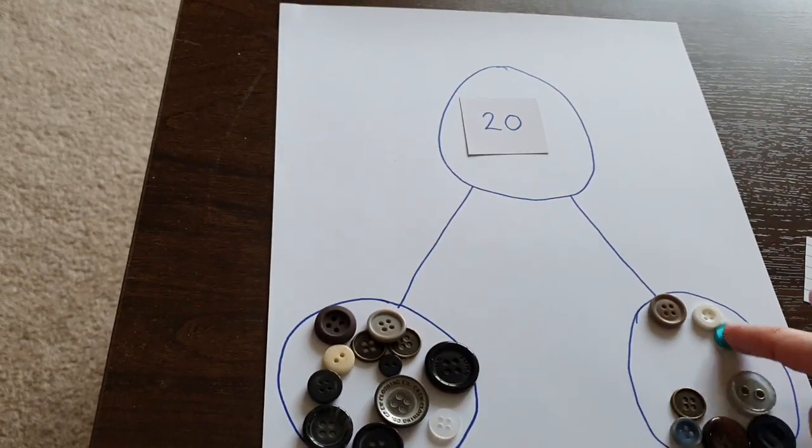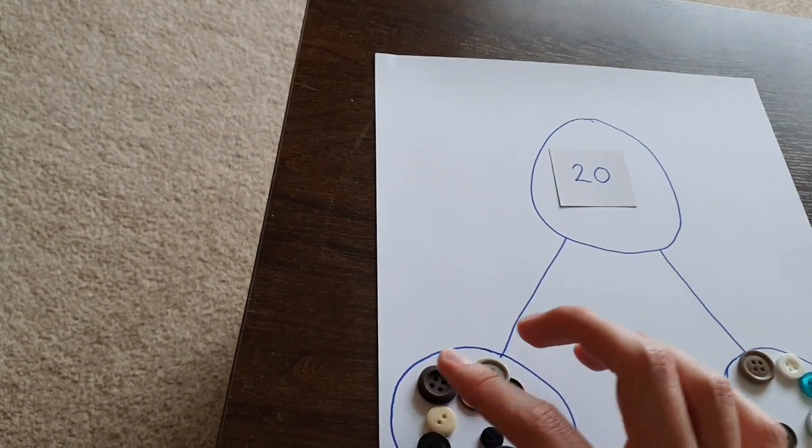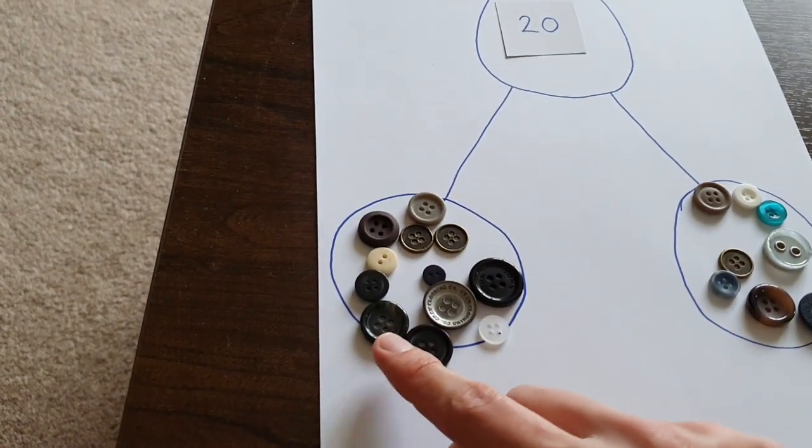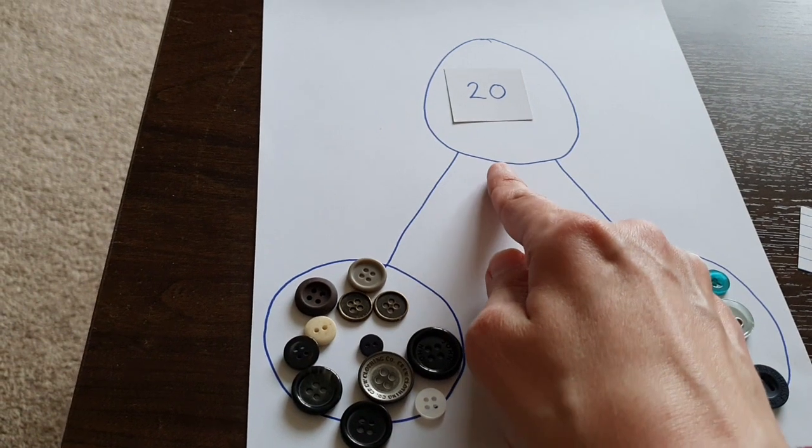So I've got 1, 2, 3, 4, 5, 6, 8—1, 2, 3, 4, 5, 6, 7, 8, 9, 10, 11, 12. So now I can say 12 is a part and 8 is a part, and together they make 20.